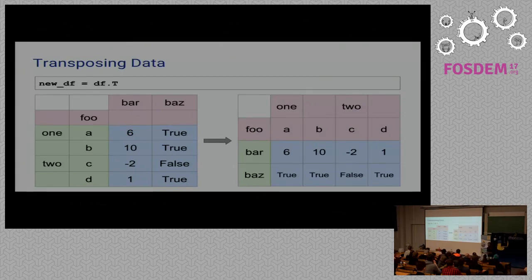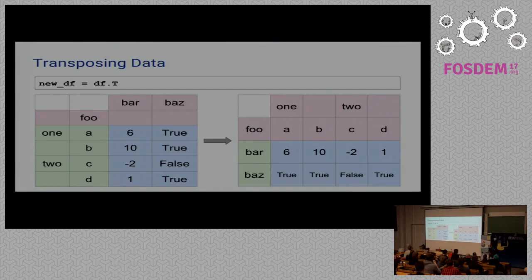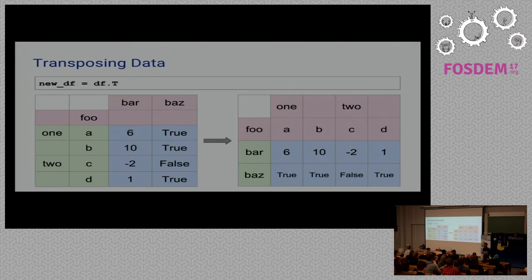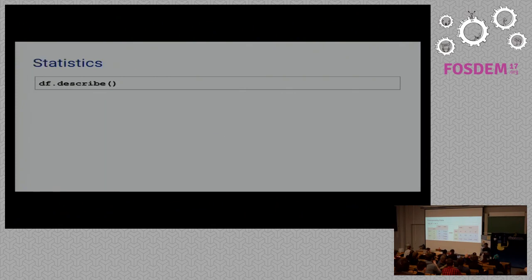We also have transposing data, which is really useful for matrix operations. In this case, indices were 1 and 2 at one level, then A, B, C, D at the next. After transpose, the column names bar and bars become the indices, so the index is no longer multi-level — it's just one level — and the column structure becomes multi-level now.